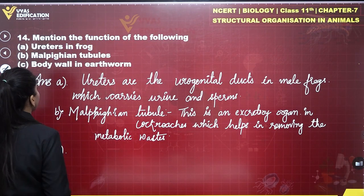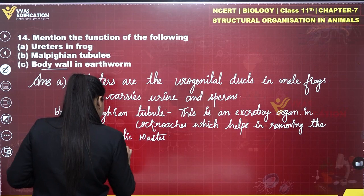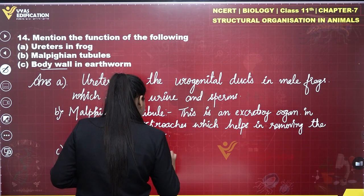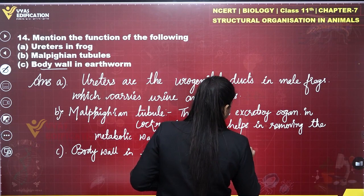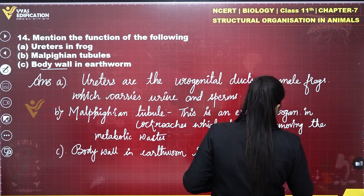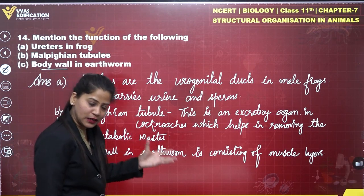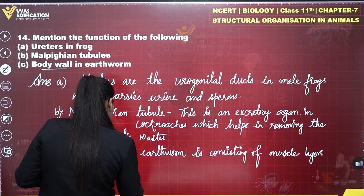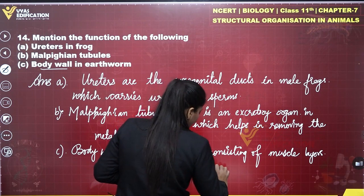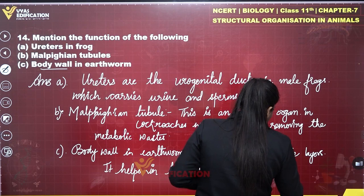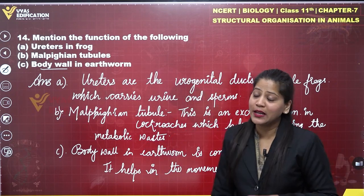For answer (c), the function of body wall in earthworm: the body wall in earthworm consists of muscle layers, and it helps in locomotion and movement.